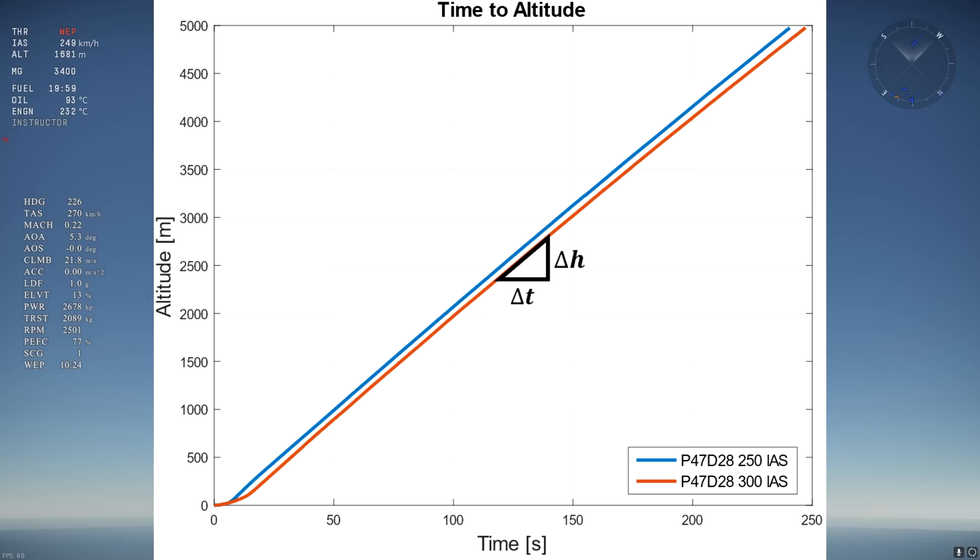On the graph, the 250 and 300 slopes are very close, but the 250 slope is just a tad bit steeper as indicated by the bigger time difference at high altitude than at low altitude. According to the slope method, the 250 climb is more efficient than the climb at 300, but is that really the case?